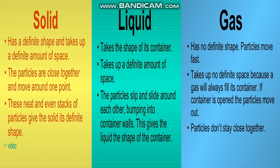In a liquid, the particles are close together but they can slide over one another within a certain limit. Therefore a liquid has no fixed shape, but it does have a fixed volume. Even though they take the shape of the container, their volume does not change. For example, if you take 2 ml of water and pour it in a cup, then in a bottle, then in a glass, they take up the shape of those containers but their volume will remain the same — 2 ml.